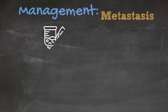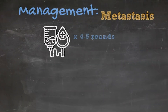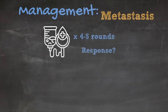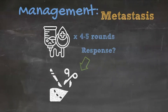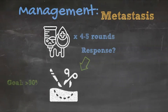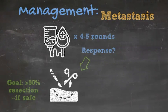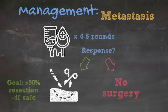How would your care plan change if your patient had metastasis? Typically those patients would receive four or five cycles of neoadjuvant chemotherapy and then be reassessed. If the tumor is responding — and specifically if the metastatic disease is responding — then one would attack the primary tumor site with a resection. Many, including myself, would advocate for attempting a greater than 90% resection. If the metastatic disease is progressing, then surgery is not indicated.